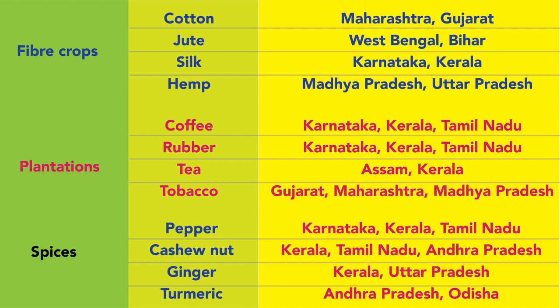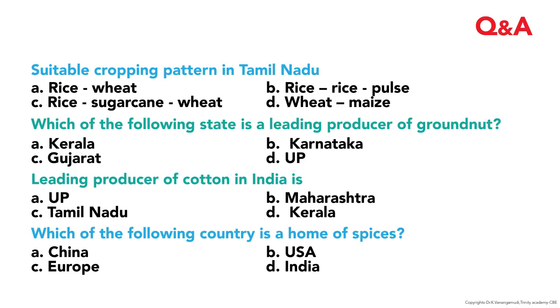Tobacco is grown in Gujarat, Maharashtra, and Madhya Pradesh. Regarding spices: pepper's major area is in Kerala, Karnataka, and Tamil Nadu. Cashew nut is grown in Kerala, Tamil Nadu, and Andhra Pradesh. Ginger is cultivated in Kerala and Uttar Pradesh. Turmeric — majority of the area is in Andhra Pradesh and Odisha.